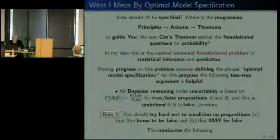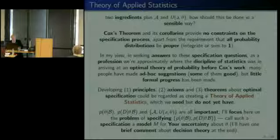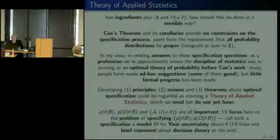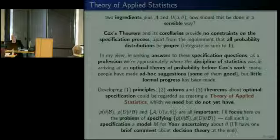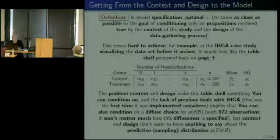That's a simple example of what I mean by optimal model specification, because of the four ingredients we're trying to figure out — the prior, the sampling distribution, the action space, and the utility function (page 25) — the last two don't come up because we're only doing inference. And of the other two, one of them is really driven directly by problem context and not requiring any sort of fiddling around in the data to see what to do. That is an example of optimal model specification.